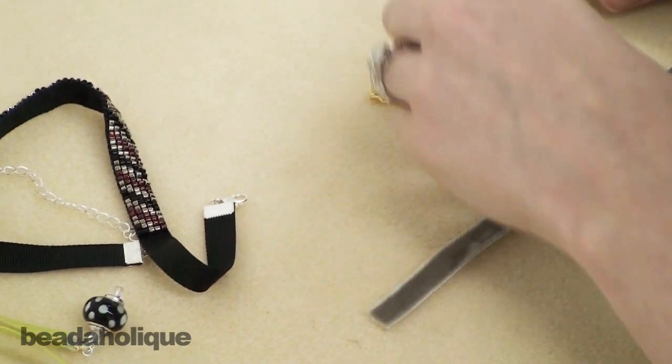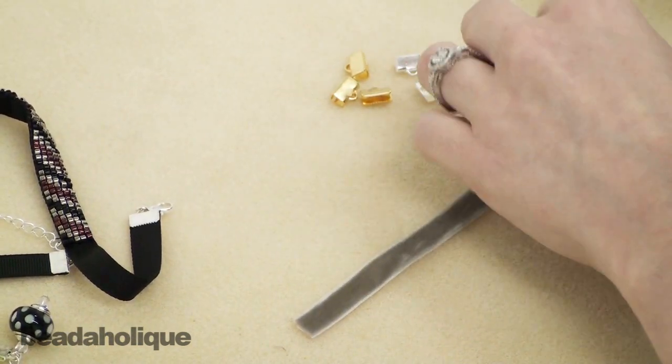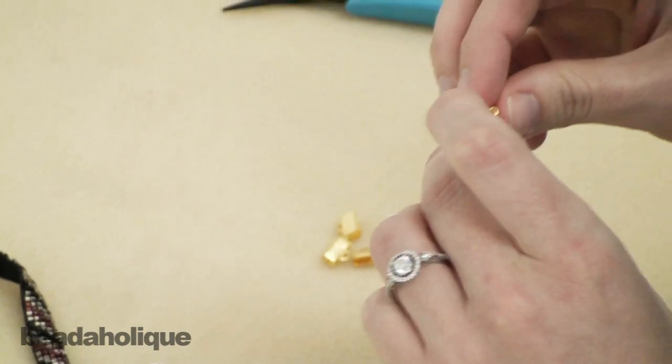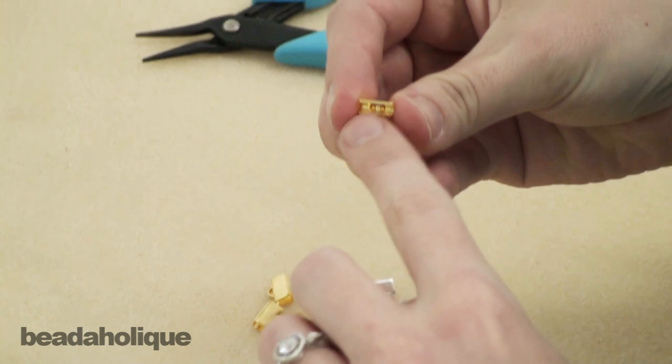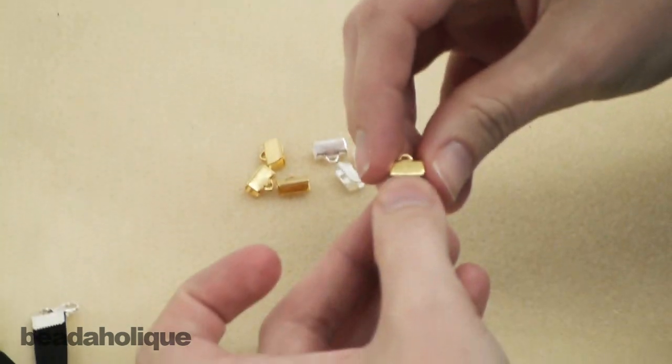So to attach the crimp it's very simple. You just take the crimp and put it on the edge of the ribbon. You'll notice one of the sides has little teeth on it to help grab.